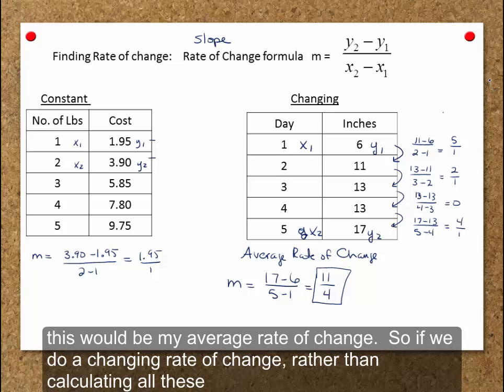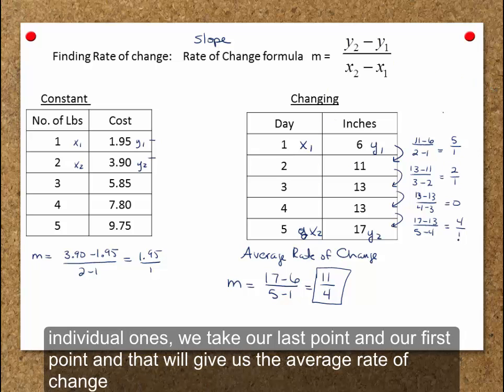So if we do a changing rate of change, rather than calculating all these individual ones, we take our last point and our first point, and that will give us the average rate of change.